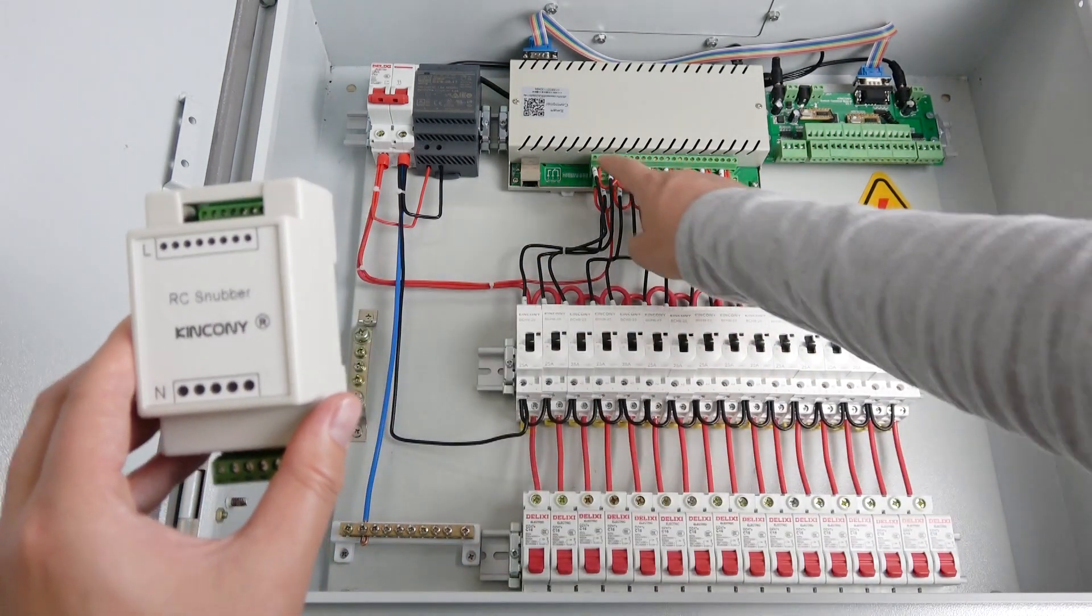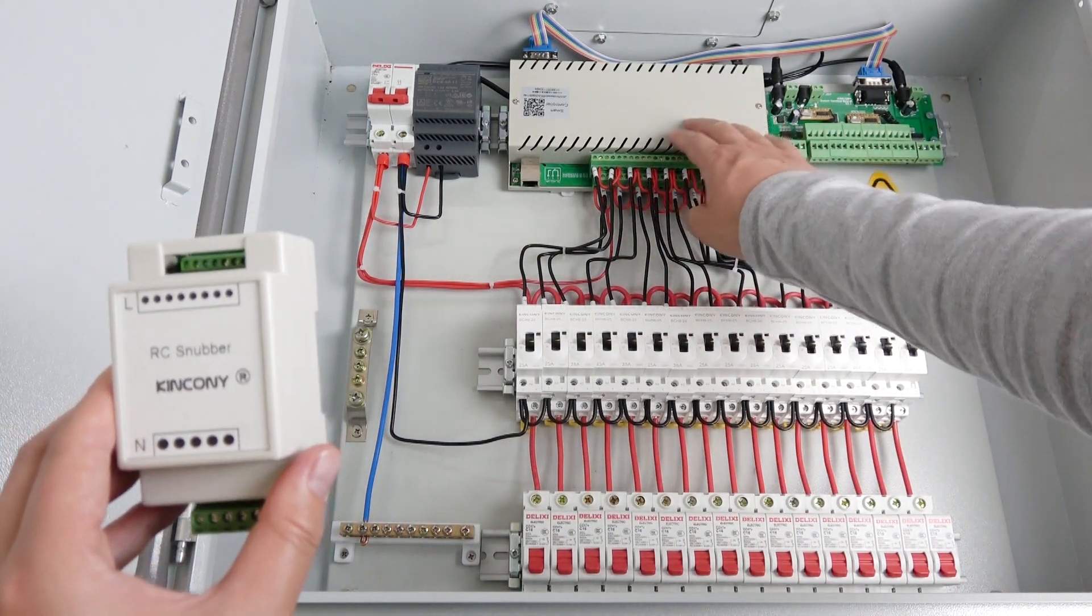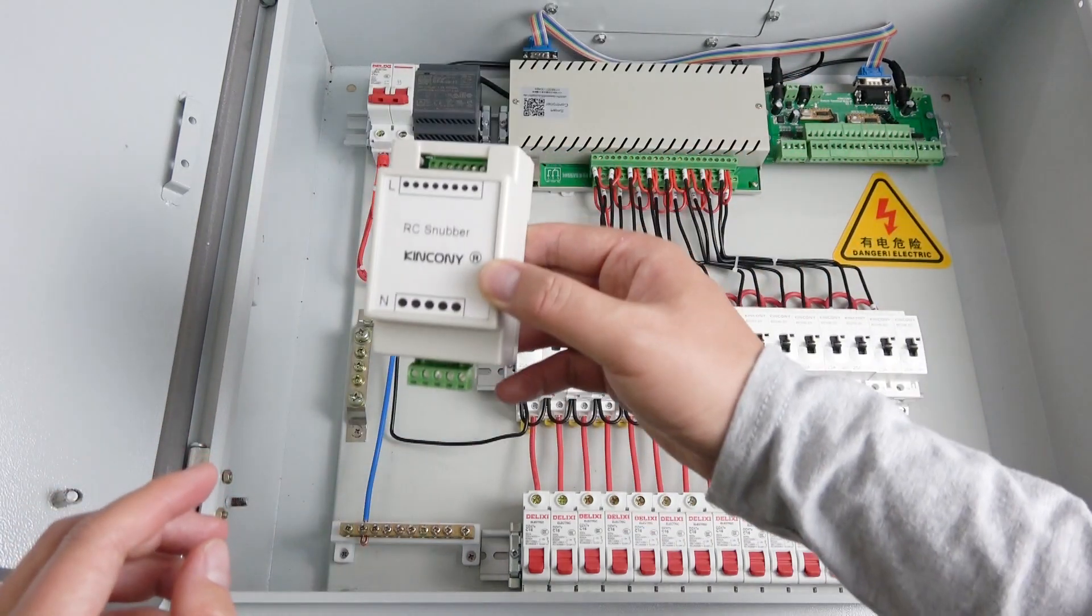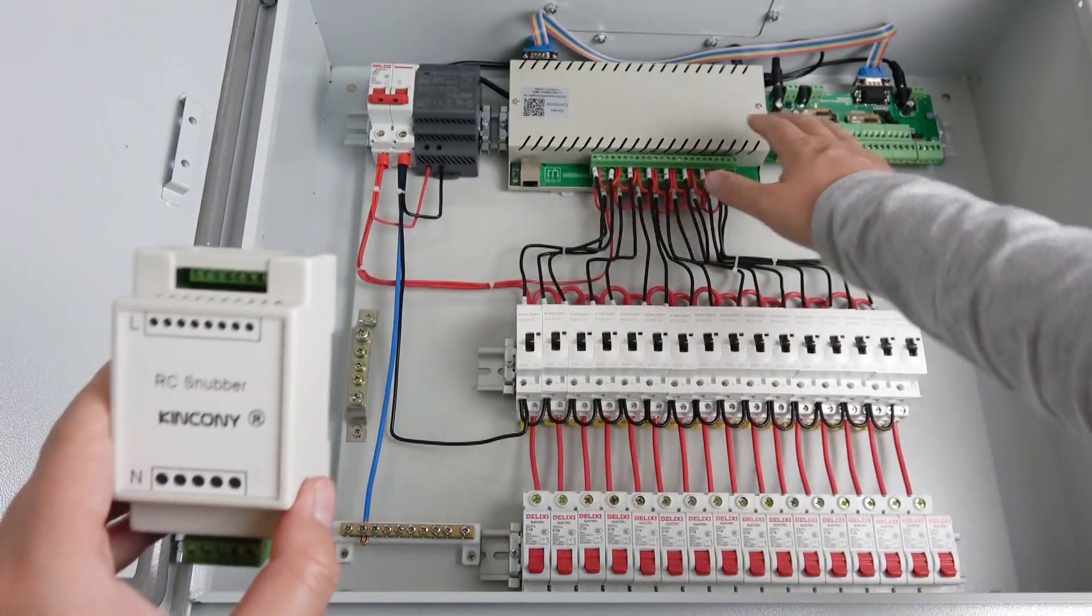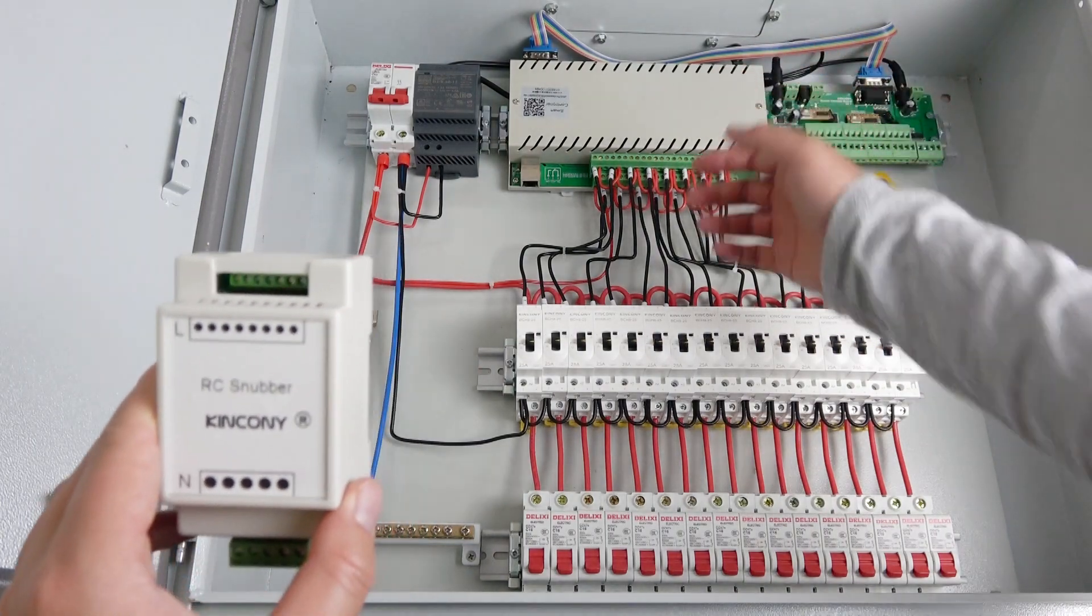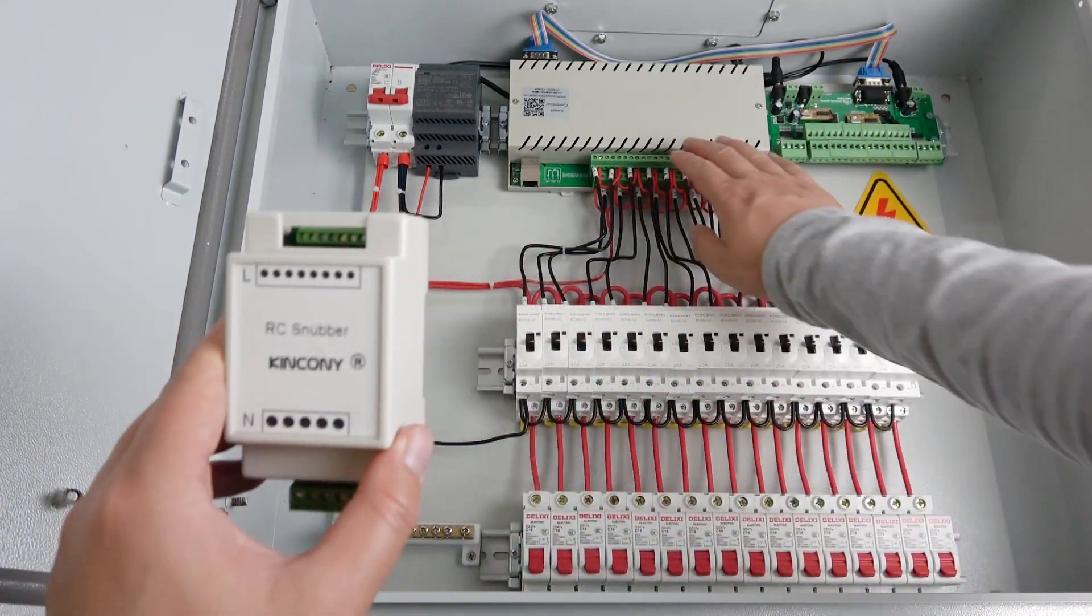It can extend the relay life. Maybe the relay can use 5 years, but you add this RC snub, the relay can use 7 or 8 years. So it can protect the relay.